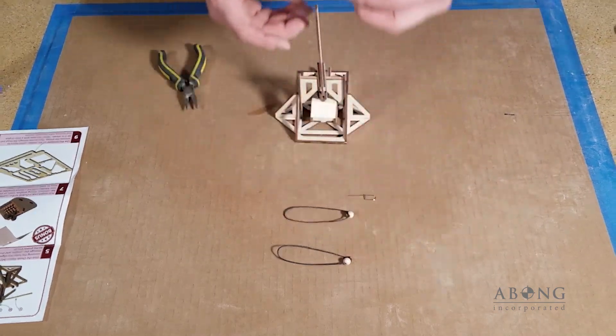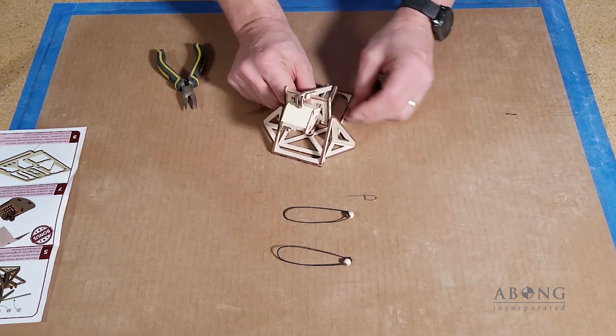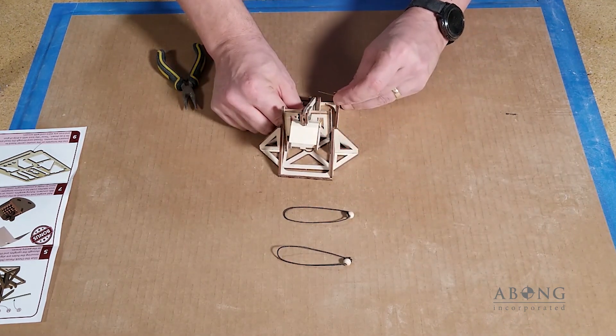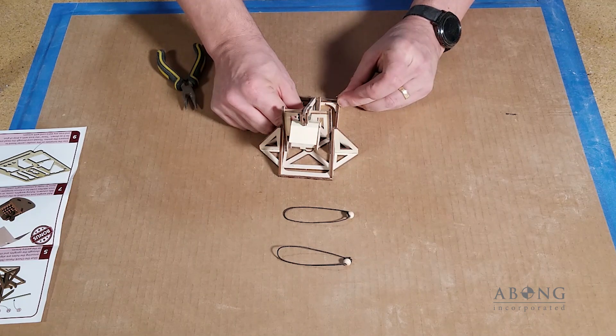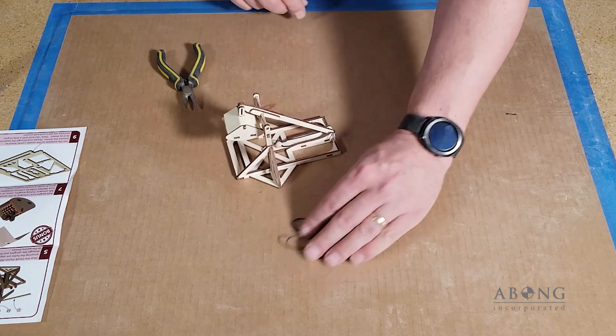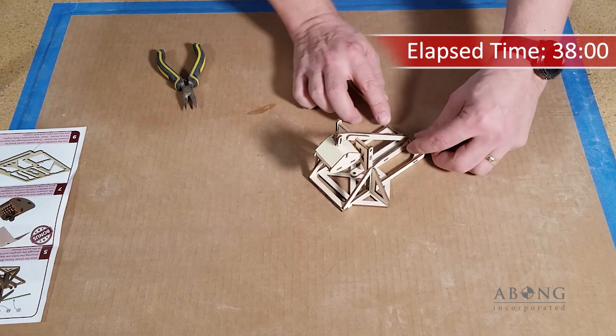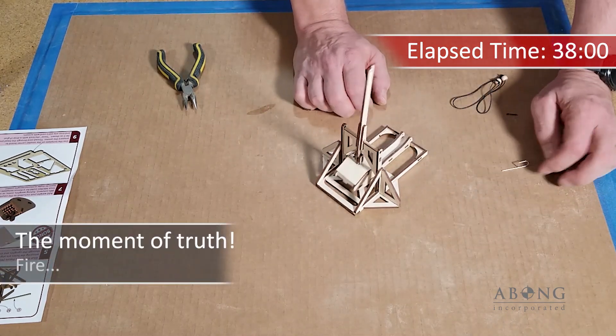So let's give it a try. So hook the ammo over the end of the throwing arm. Place it into the trough. Stick the pin through the holes in the back of the trough and the throwing arm. And we're all ready to go. Aim. Get it lined up. And fire. There it goes.